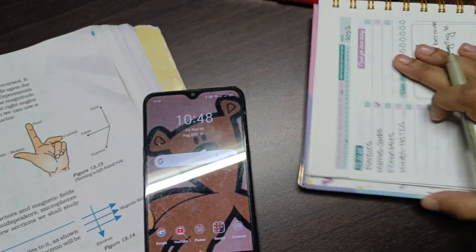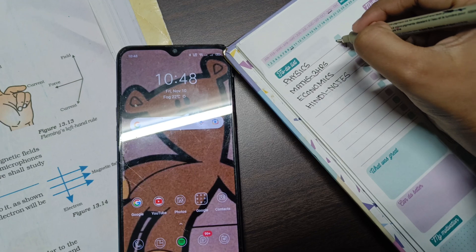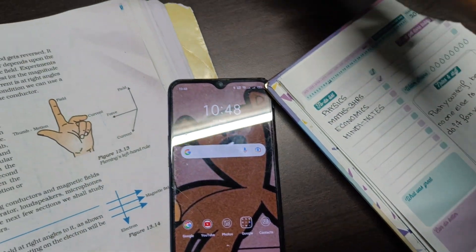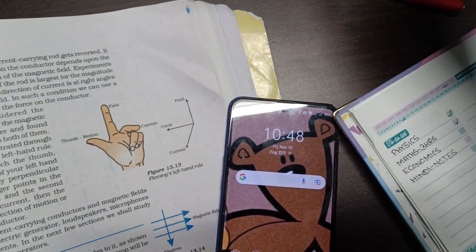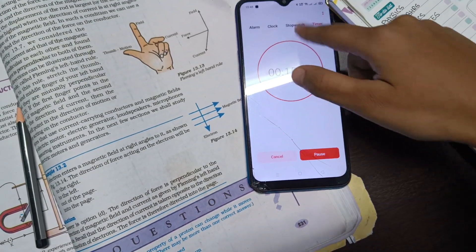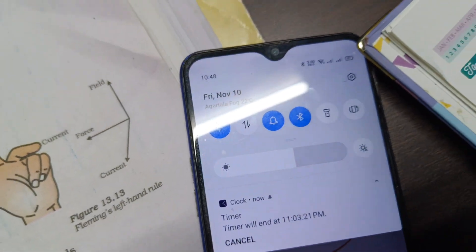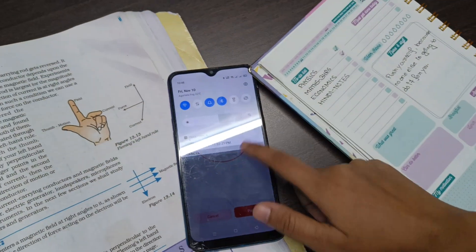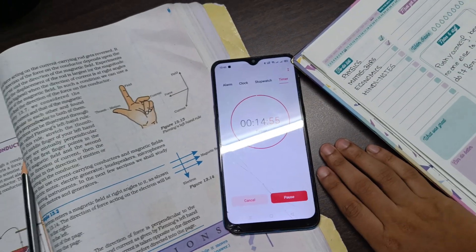It's already 10:48 and I'm done with my physics work for today. Right now I'm going to take a break of 15 minutes. This timer will end at 11:03, so from 11:03 I'll start studying economics.